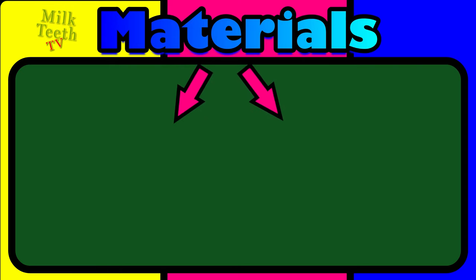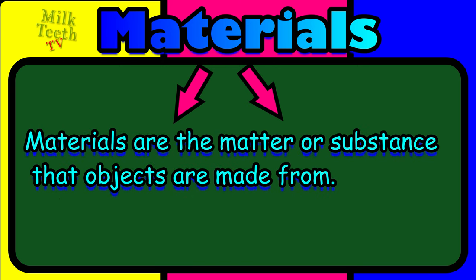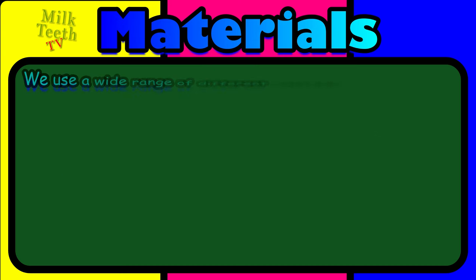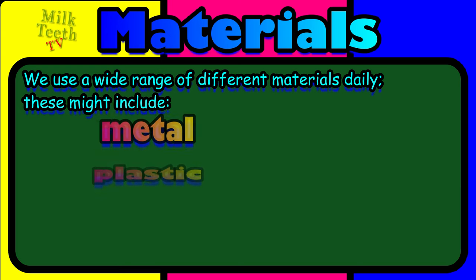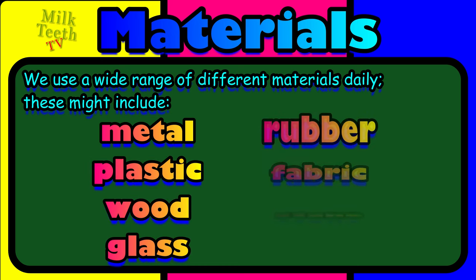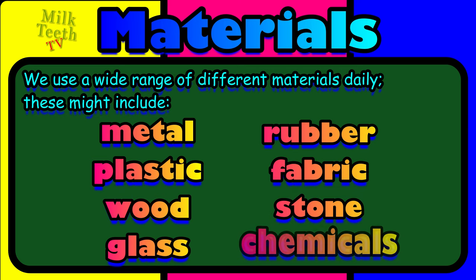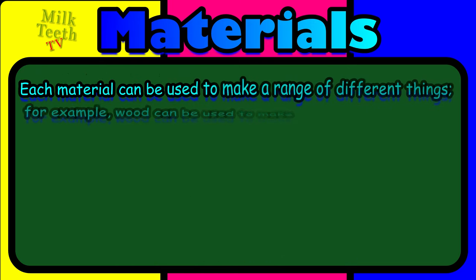Materials are the matter or substance that objects are made from. We use a wide range of different materials daily in our everyday lives. These might include metal, plastic, wood, glass, rubber, fabric, stone, and chemicals.